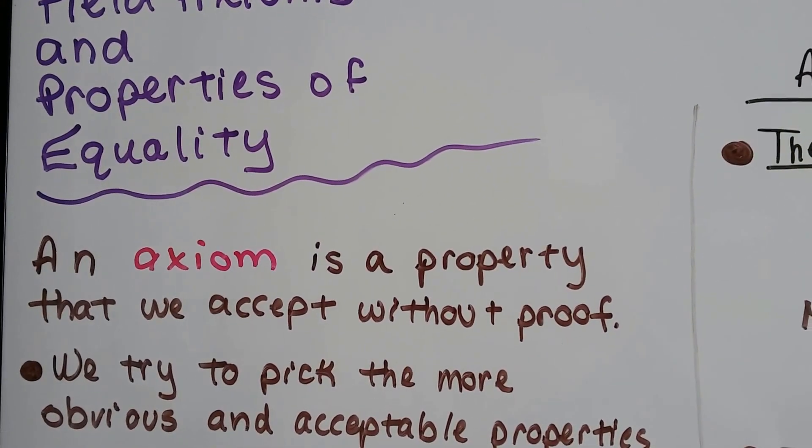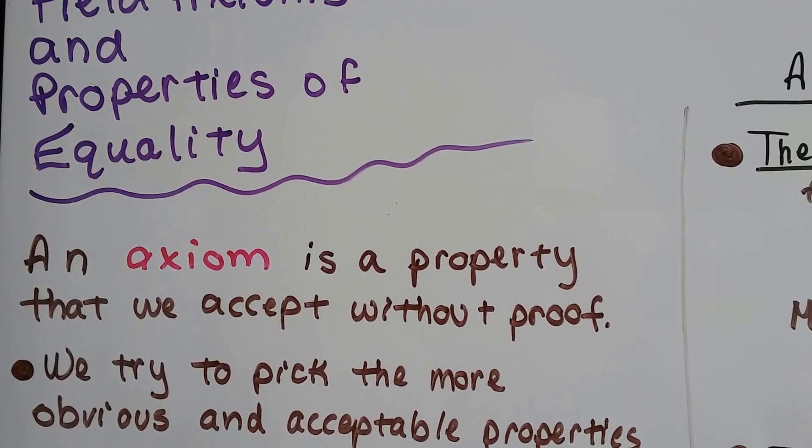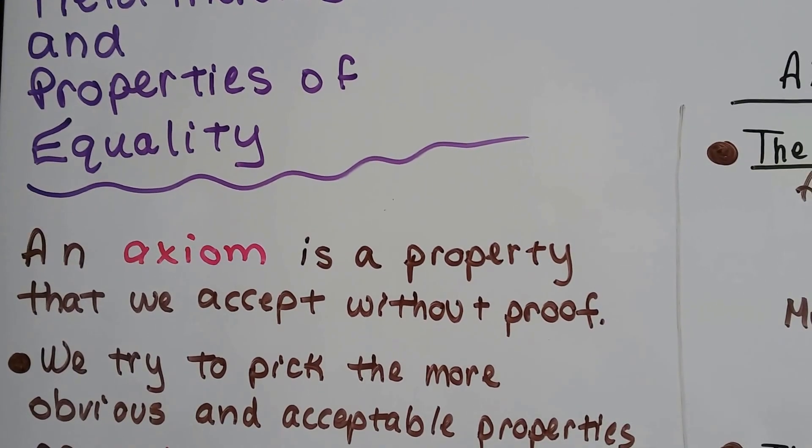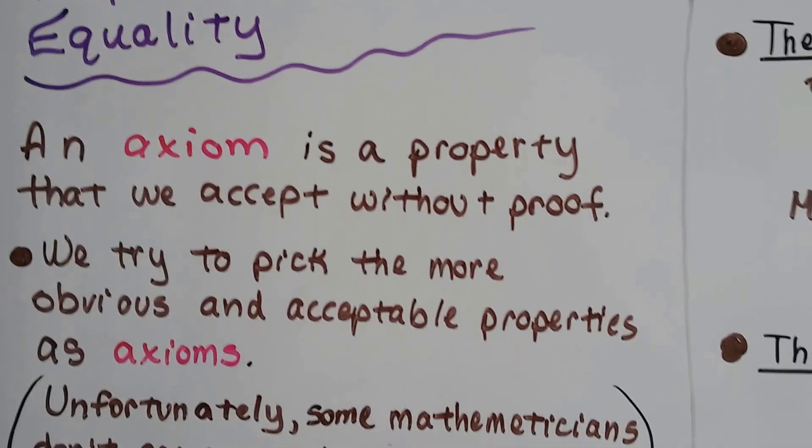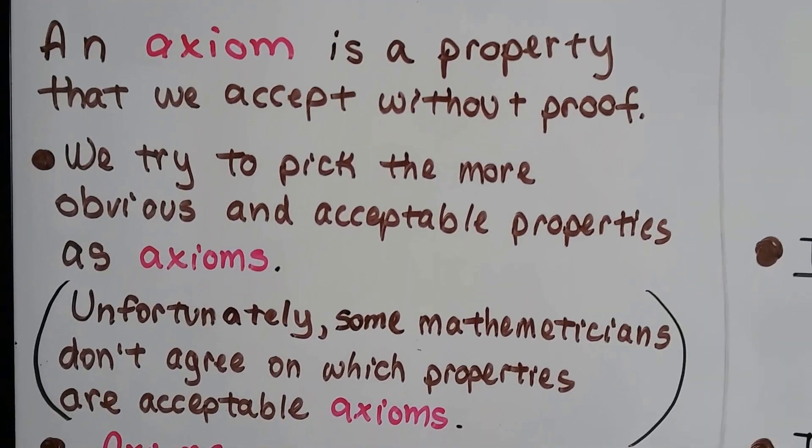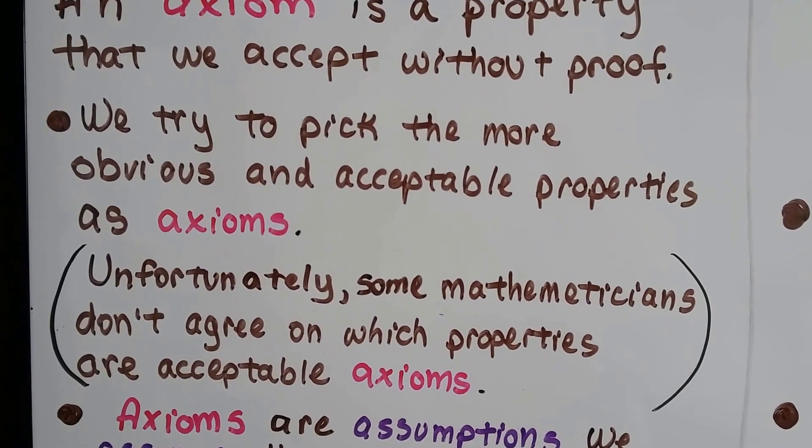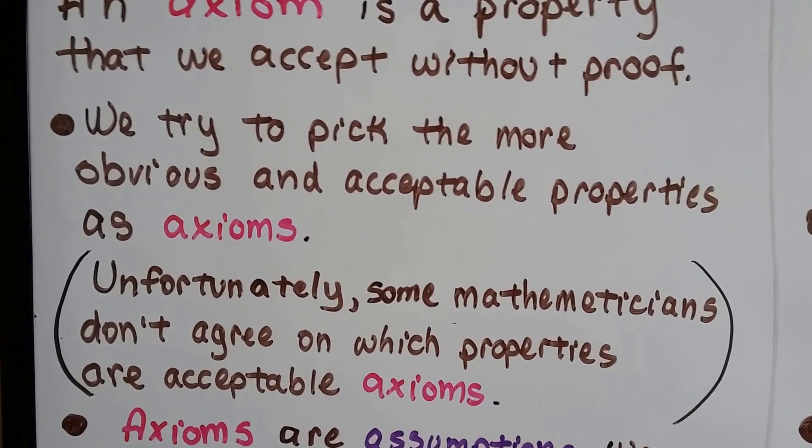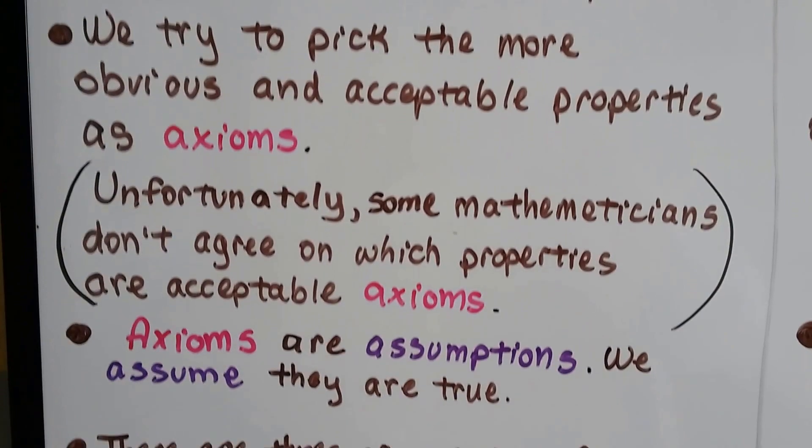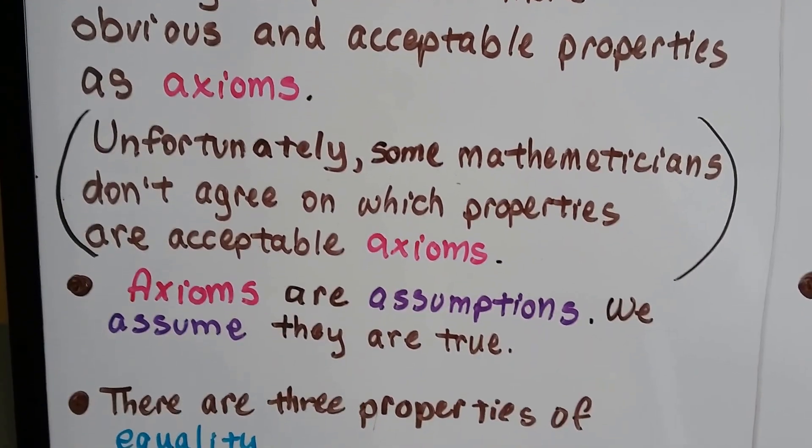An axiom is a property that we accept without proof. Whether that property is an axiom or not could be debatable, because we try to pick the more obvious and acceptable properties as axioms, but unfortunately some mathematicians don't agree on which properties are acceptable axioms. Not everyone agrees. But axioms are assumptions, and we assume they're true.